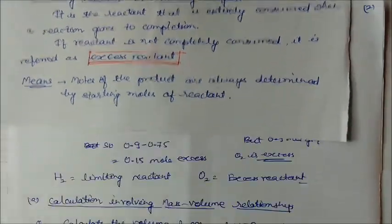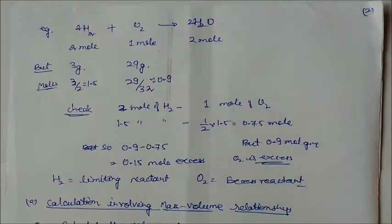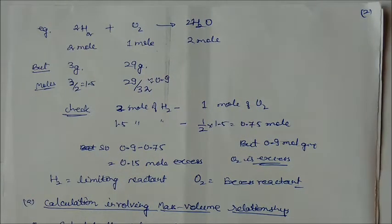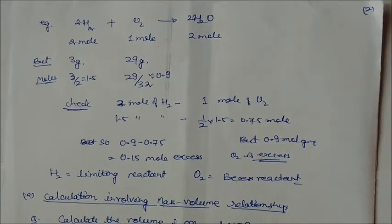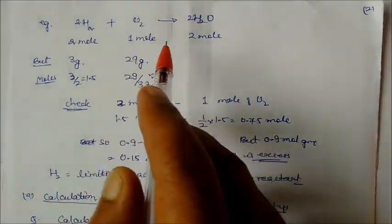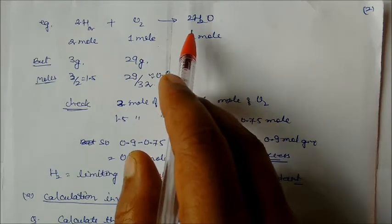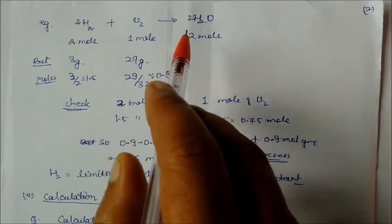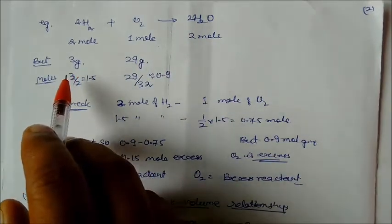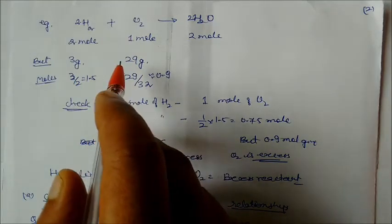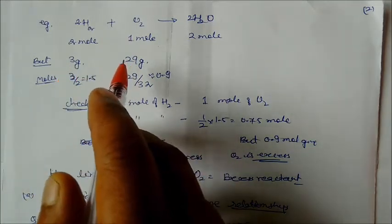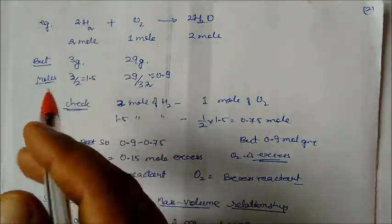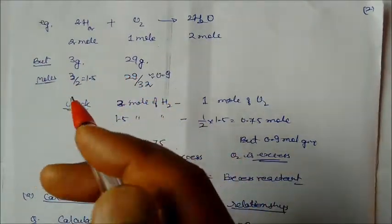Consider: H₂ + O₂ → H₂O. Balanced: 2 moles of hydrogen react with 1 mole of oxygen to give 2 moles of water. For the limiting reagent example, we are given 3 grams of hydrogen and 29 grams of oxygen. Which quantity is lesser — that will be the limiting reagent.